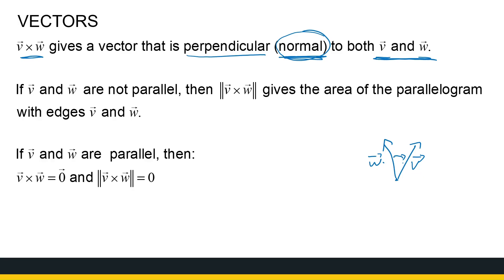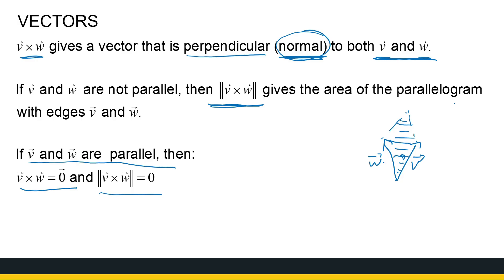If the vectors are not parallel, the magnitude of V cross W gives the area of the parallelogram with edges V and W. If V cross W equals zero, the vectors are parallel, and the cross product is zero — there is no parallelogram between them. In the next video, we'll look at more examples and more properties of the cross product.